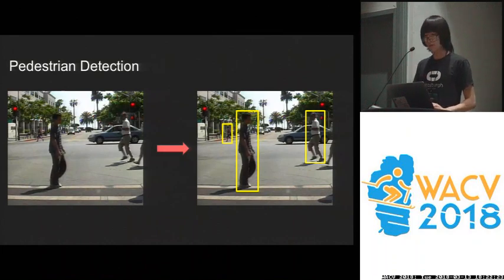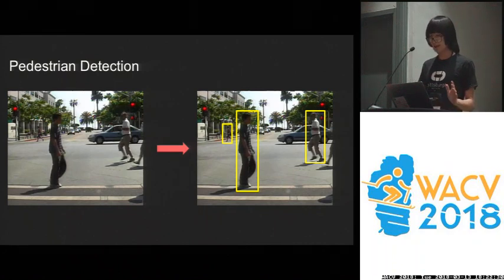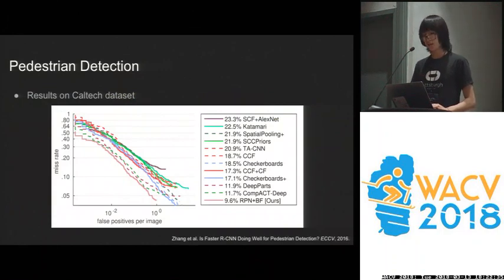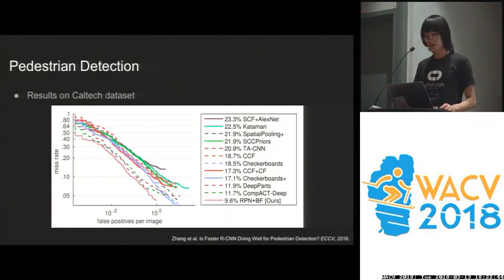Pedestrian detection is a very hot topic in computer vision over the past decade. Given the input image, the goal is to detect and localize pedestrians in input images. Lots of work has been done in this area. This figure is a summary of the results on the Caltech dataset by 2016. You can see that the best entry at that time can already achieve an average miss rate less than 10%, which is pretty good.